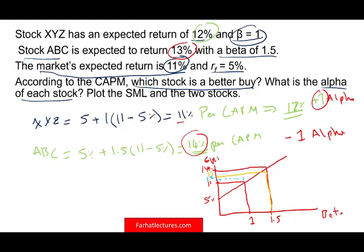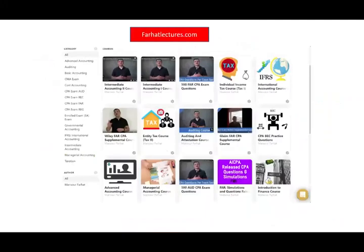So it has a negative alpha. Hopefully you get the point from the prior graph, the difference of 1% positive alpha and 1% negative alpha. Which stock would I buy? I will buy the stock with positive alpha because it's outperforming. It's outperforming the CAPM.